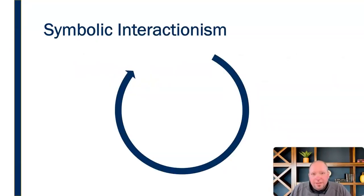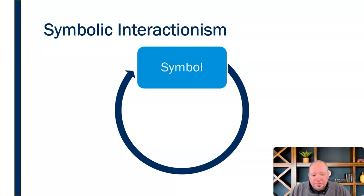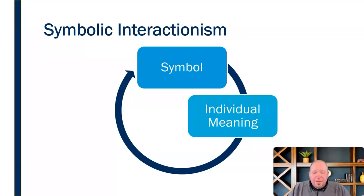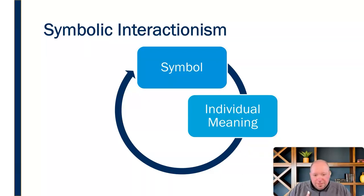Symbolic interactionism is a process that starts with a symbol — whether it's a word, an image, a behavior, whatever is symbolic that somebody is trying to use to communicate. It starts with that symbol, and then we develop individual meaning: when I see this symbol, what does it mean to me specifically? What does it mean to me individually as I am experiencing this symbol?